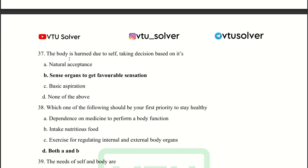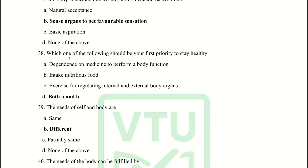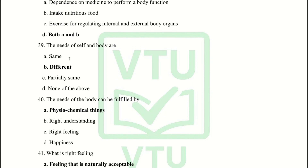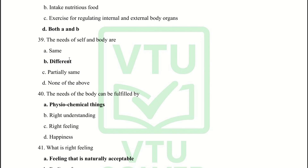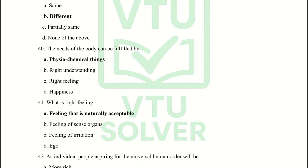The circadian rhythm is the body's response to the solar cycle. Next question: The body is harmed due to the self taking decisions based on its organs to get favorable sensations. Next question: Which of the following should be your first priority to stay healthy? Answer: Both A and B.